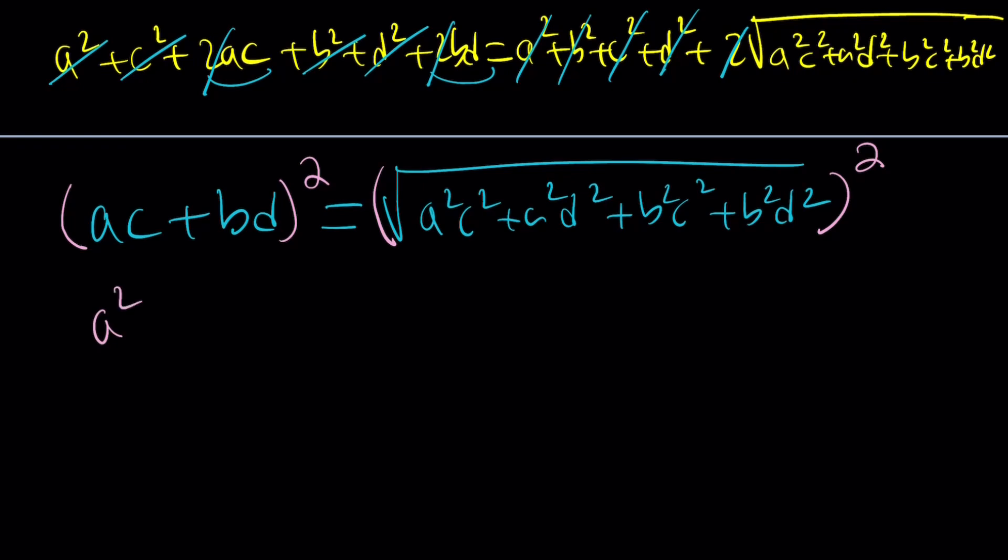And then you'll get rid of the square root. And this is going to give you A squared C squared plus B squared D squared plus 2ACBD. And the right hand side is going to be just the stuff inside the radical. The square root sign is going to disappear.